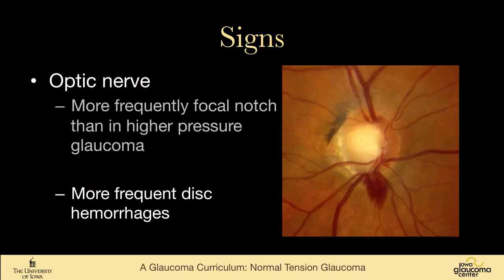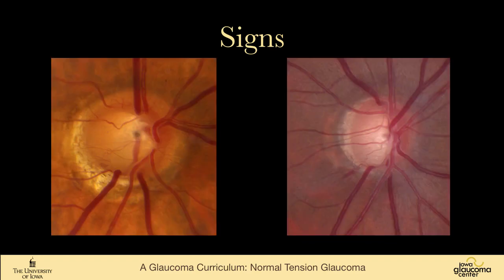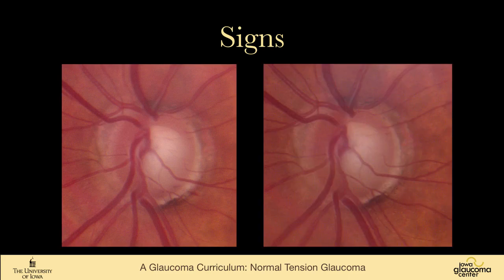Optic nerve hemorrhages are more frequent in normal tension glaucoma, and they are a poor prognostic sign that the glaucoma is not well controlled. Sometimes they're not subtle, but sometimes they're quite subtle, and often they're easiest to see on photographs. This patient has a very subtle optic nerve head hemorrhage — it was really easiest to see after looking at the old photograph, which let me appreciate the little hemorrhage right here that actually extends out across the border of the rim.